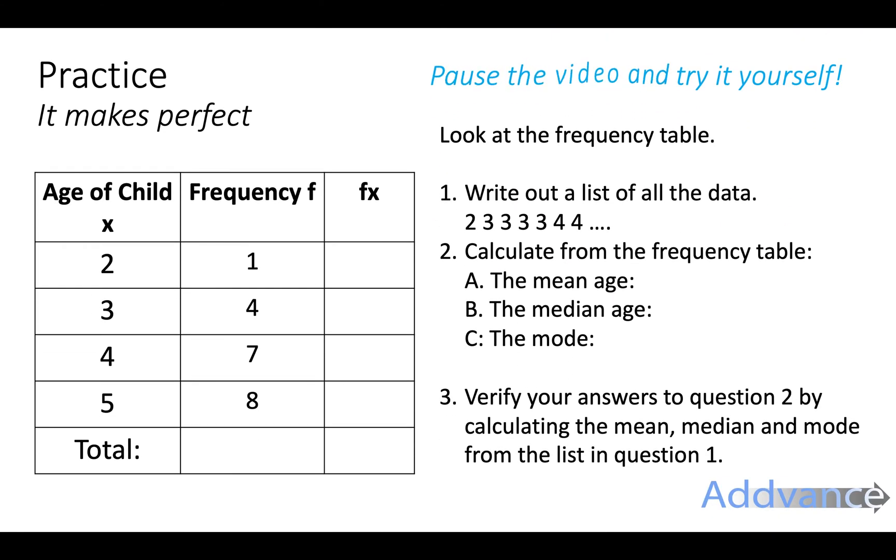Okay, now it's over to you to try some yourself. Here's a frequency table that you have to try and figure out the mean, median, and mode from. If you need to rewatch the video, that's absolutely fine before you try this yourself. The first thing I want to do is write out the full list of data. For example, there's one child with an age of two, so we put a two here. There's four children with an age of three, so put three four threes here, and continue that list of data in full.